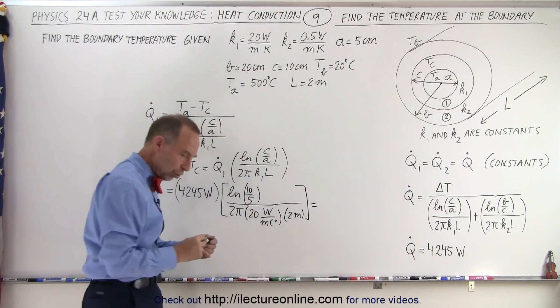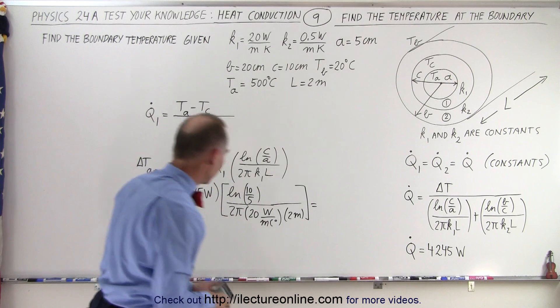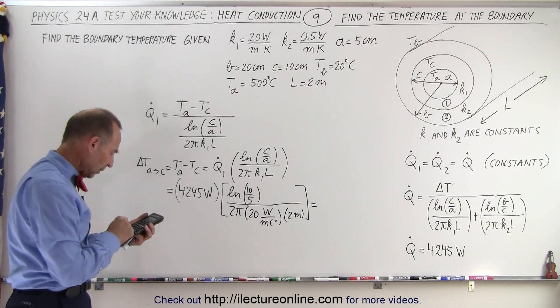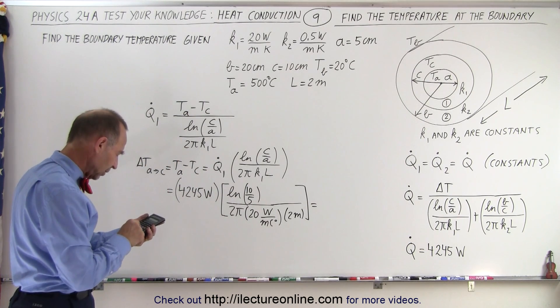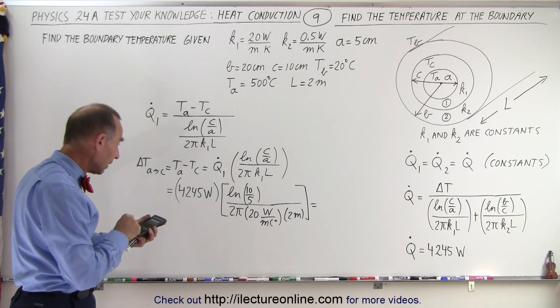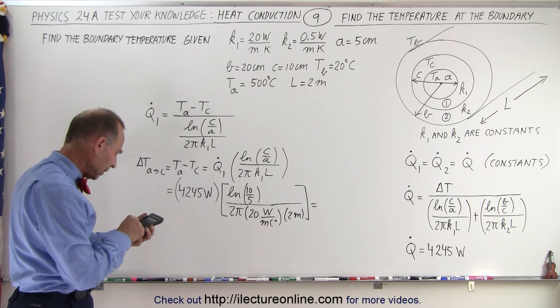And that is equal to, of course again we need a calculator, so we have the natural log of 2, divided by 2, divided by 2, divided by π, and divided by 40.